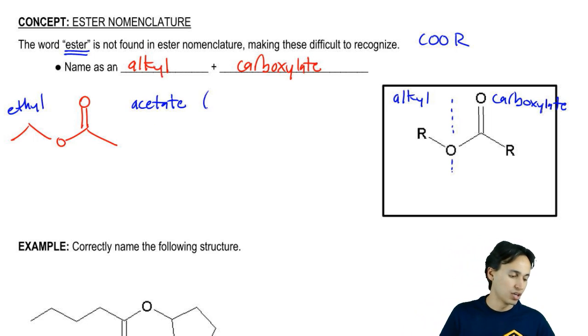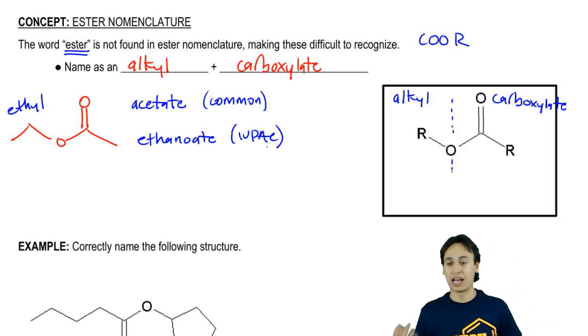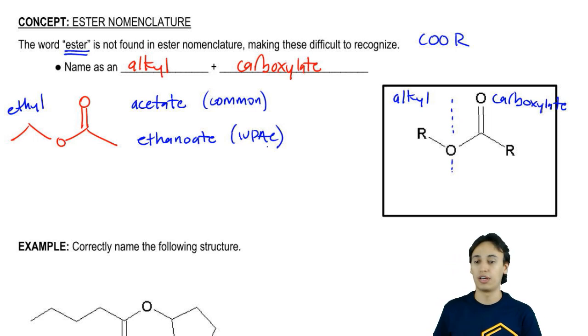Or that's in the common name. Or it could be named as ethanoate because it's ethanoic acid, so it would be IUPAC. Both of these would be correct. You'll hear ethyl acetate, you'll hear ethyl ethanoate. Obviously acetate is way more common. You hear that everywhere. So ethyl acetate would be the name of that structure there.